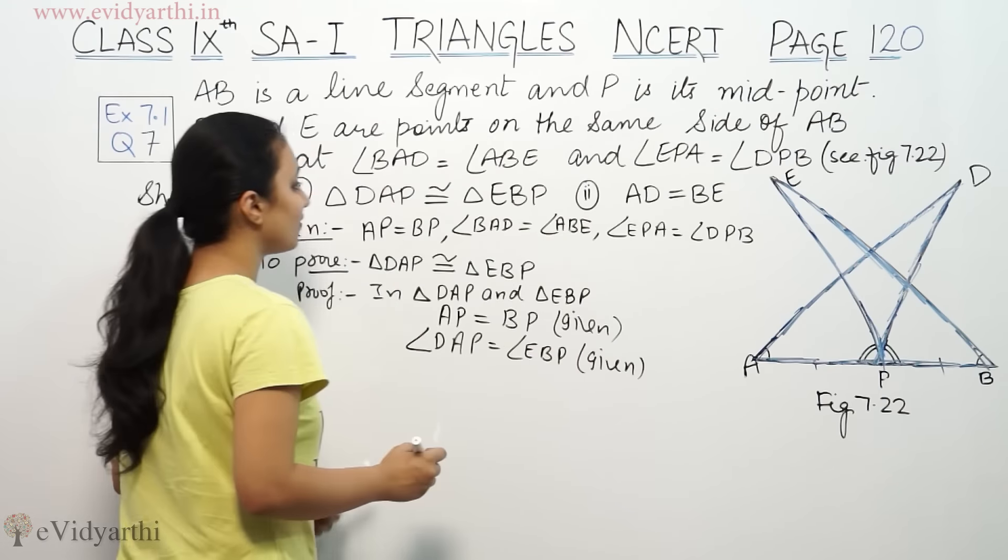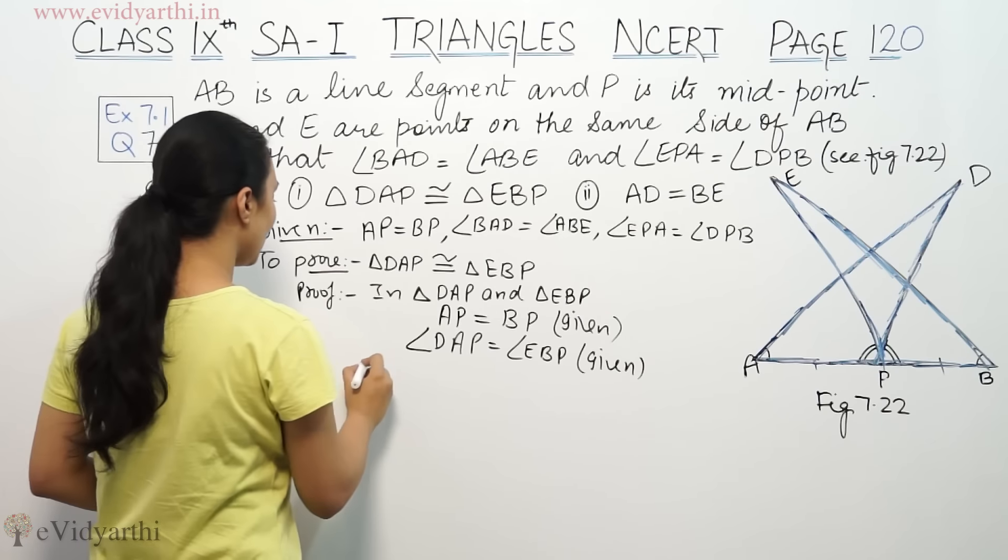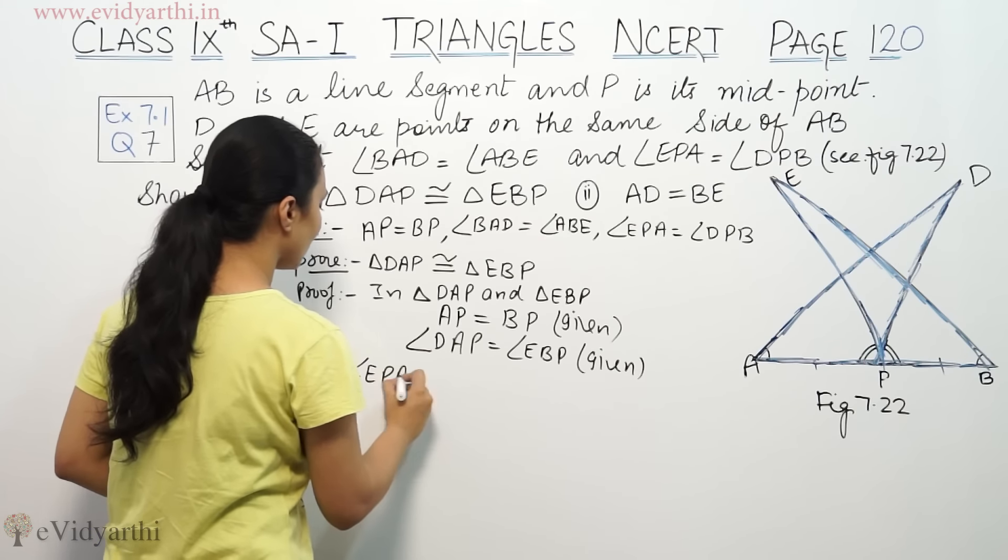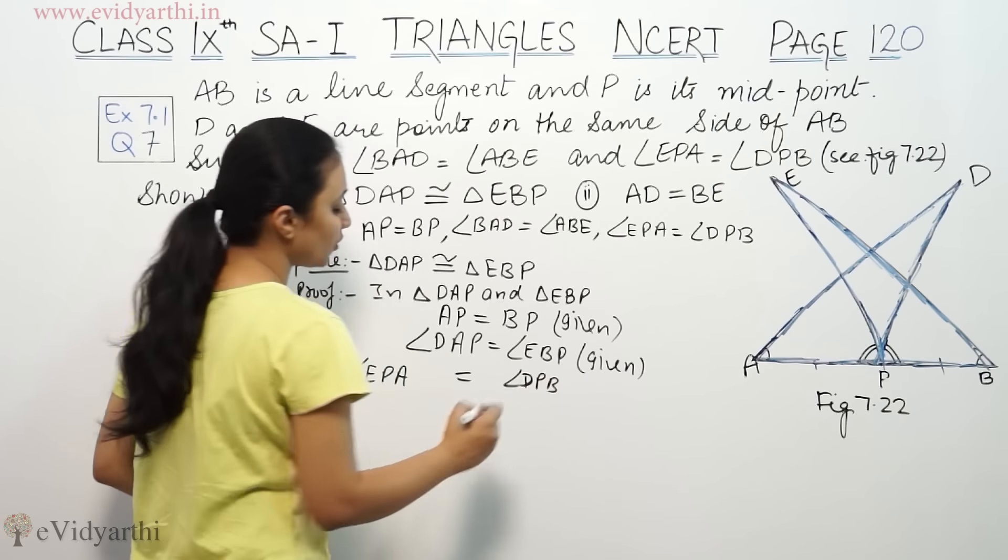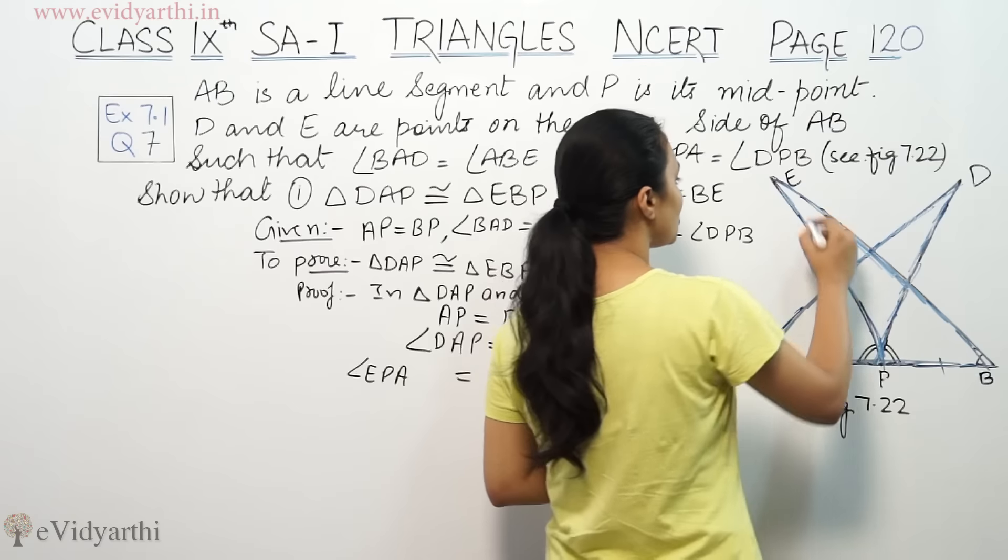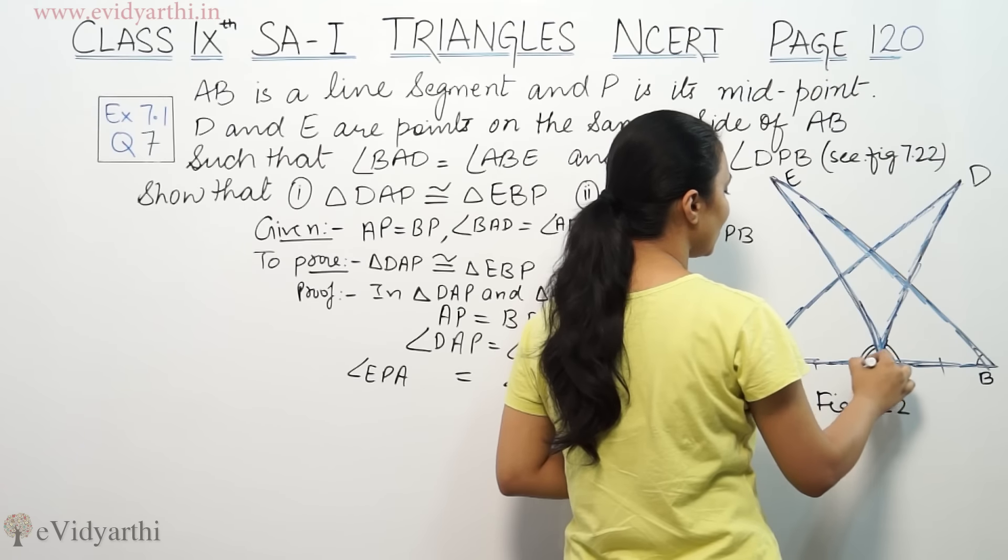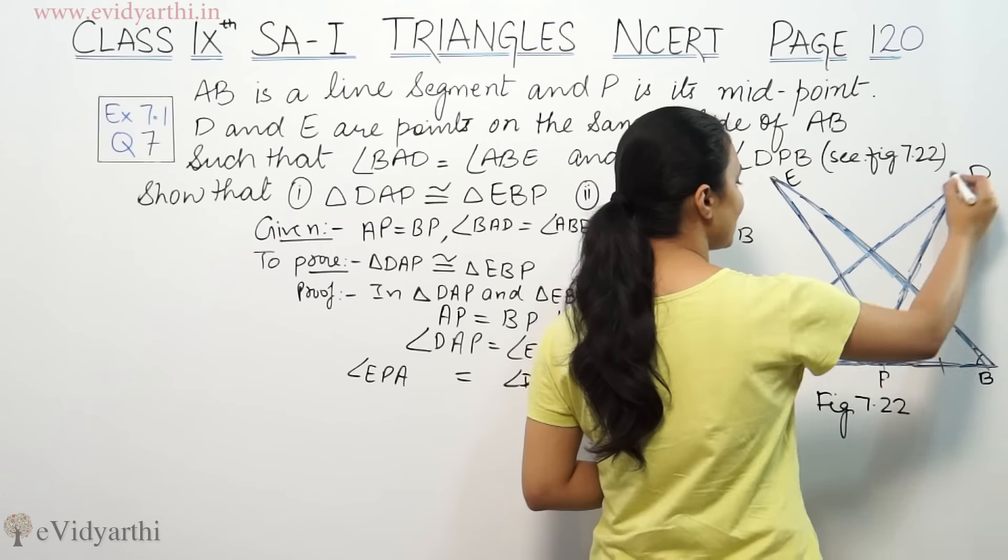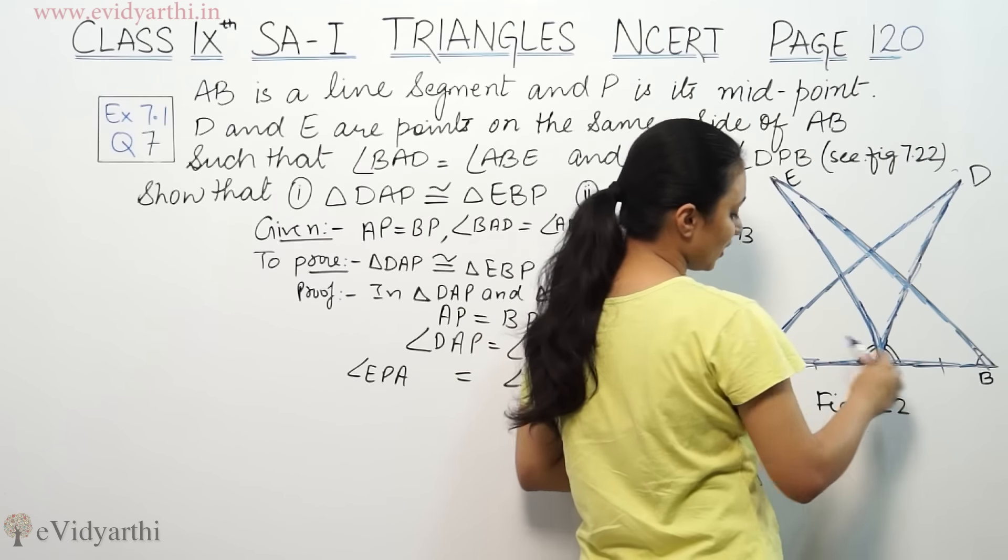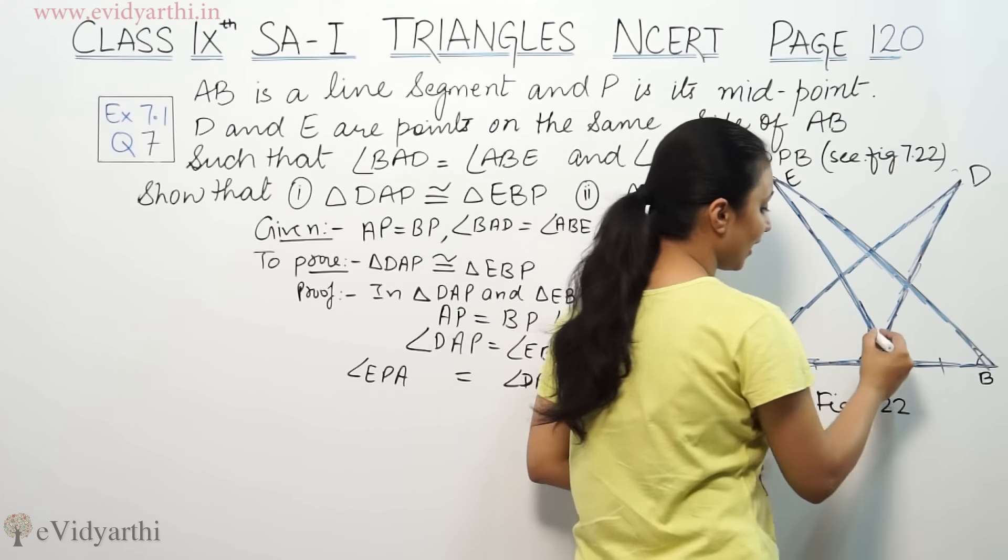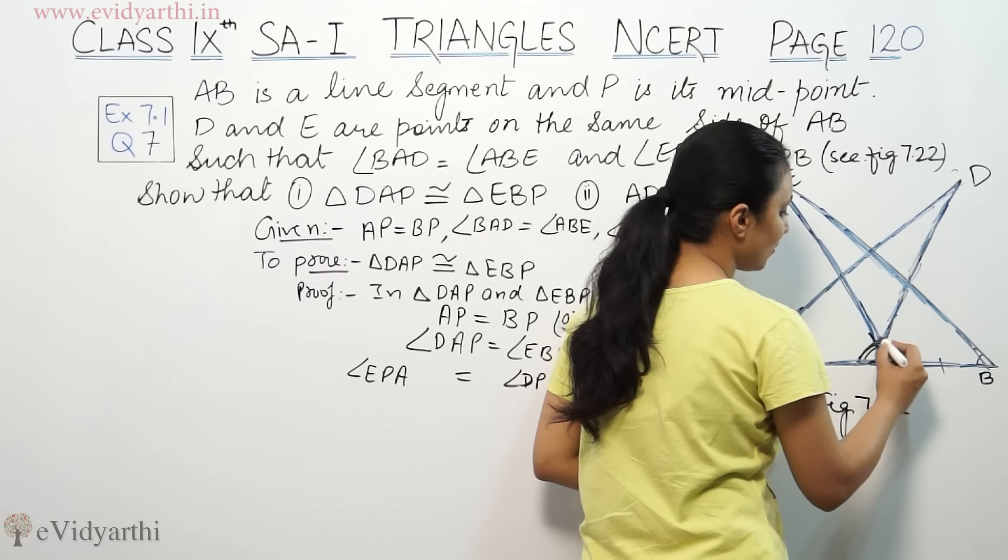The third angle which we have given is EPA equals to BPB. But this is not in our triangle. The triangle is like this. This line will not be cut. So this is something that we have to work on.